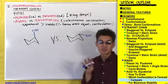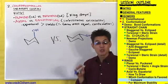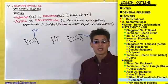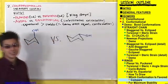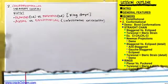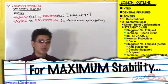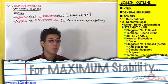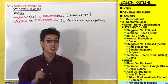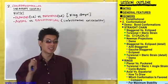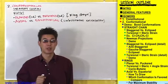But this is a really simple example, so let me give you two more rules for when rings get more complicated. For maximum stability in a ring, you want number one: most substituents to be equatorial, and number two: you want the biggest substituents to be equatorial.